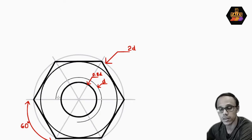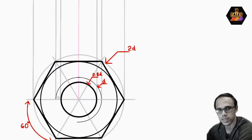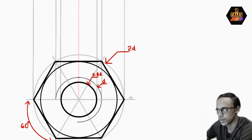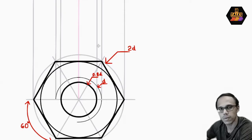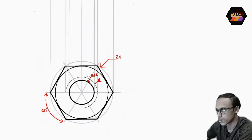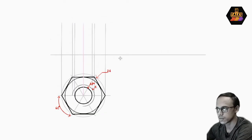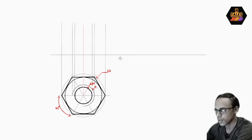Now we have the front view. We have construction lines projected from the top view. In the front view, we have a base. We will darken the lines a little bit and then mark the height next.